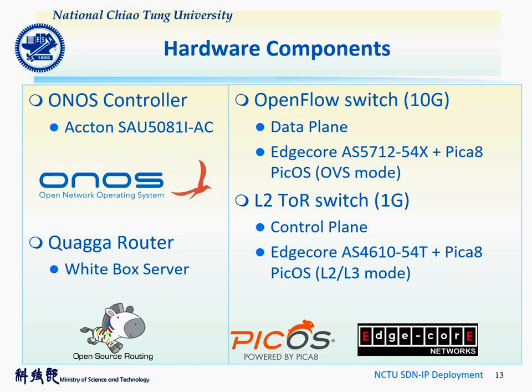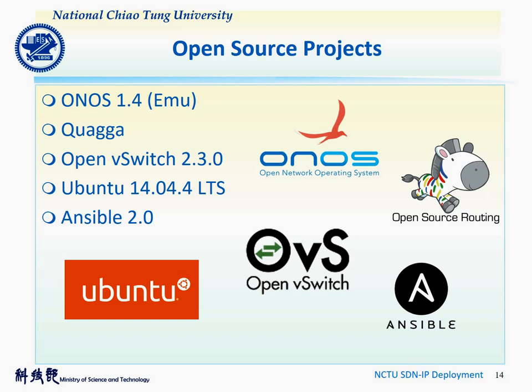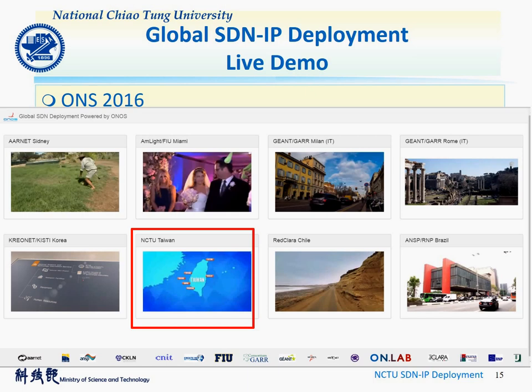In the deployment, we use several different open source projects including ONOS, Quagga, Ubuntu 14.04 LTS, Open vSwitch, and Ansible. In the global SDNIP live demo website, we can see that the bottom left side shows the icon of Taiwan in the NCTU Taiwan section, representing that NCTU SDNIP is working.